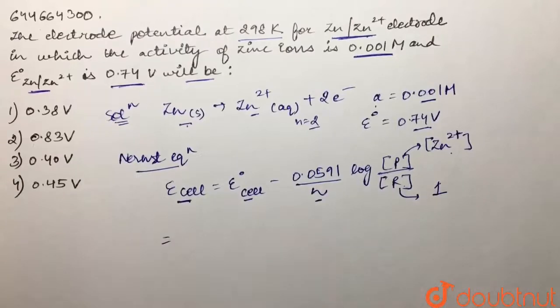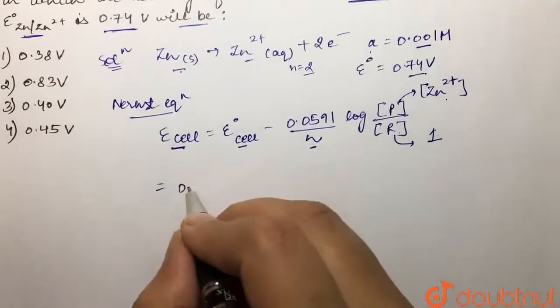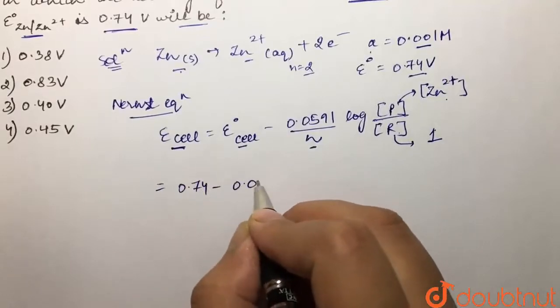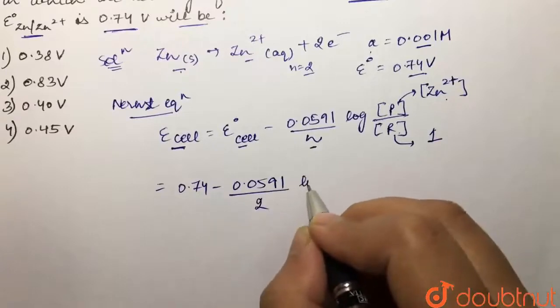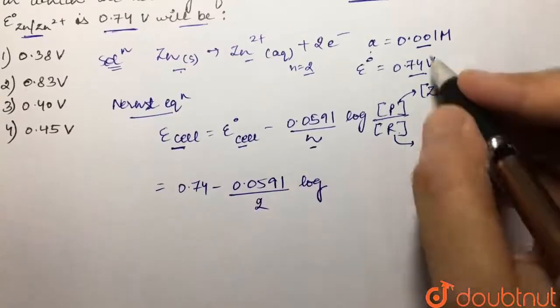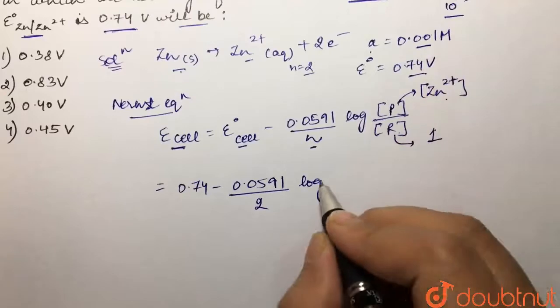Now we're going to put all the values and find out E of cell. So E naught of cell is 0.74 minus 0.0591 divided by n that is two, and then we have log the concentration of zinc is 0.001 molar, so we can write 10 raised to the power minus 3 over here.